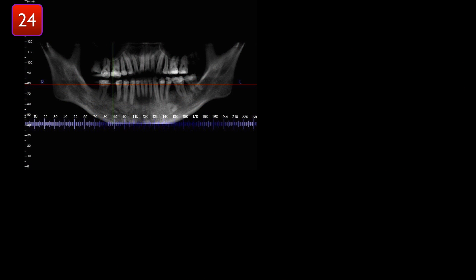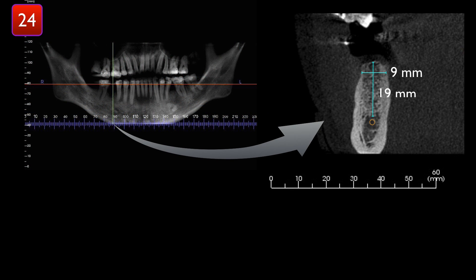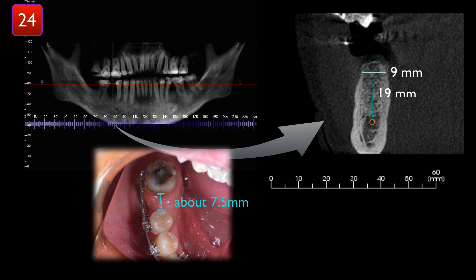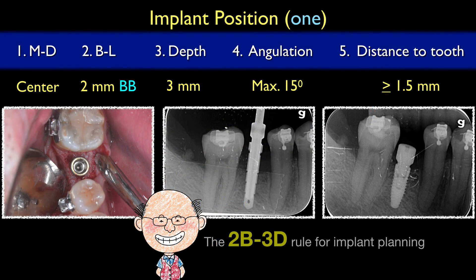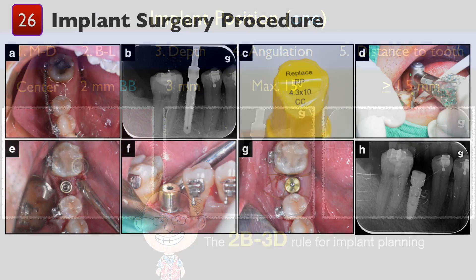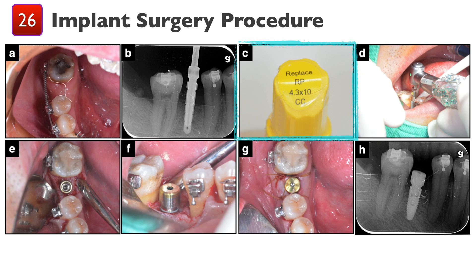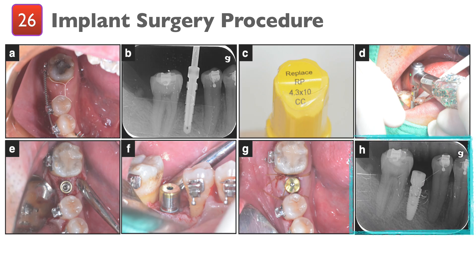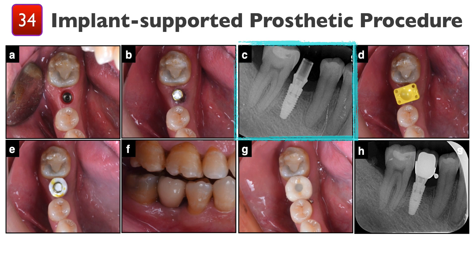From the CT scan, the implant site was measured with a 9mm width and a 9mm height. The mesial-distal dimension was about 7.5mm. According to the 2B3D rule, an implant fixture with a diameter of 4.3mm was selected, placed 2mm away from the buccal cortex and 3mm depth from the future crown margin. After the pick-up impression, the final prosthesis was delivered.